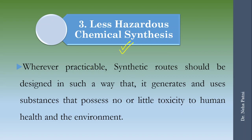Let us quickly start with what this third principle is all about. They say that wherever practicable, synthetic routes should be designed in such a way that they generate and use substances that pose no or little toxicity to human health and the environment. So basically, if you are designing a process to convert a reagent into a product, you have to make sure that the method involves very little toxic material.